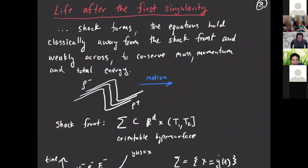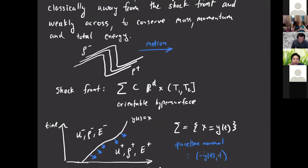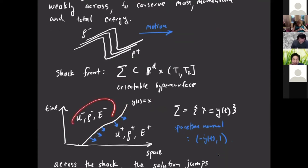Now the main contribution of the present work: how to continue past this first singularity. A discontinuous shock wave has to emerge, and across this surface the variables will have jump discontinuities. There's some space-time set — the shock front sigma — that emanates from the point where there's a pre-shock. The fluid takes some values to the left and right of the shock, and those will be different, propagating as this curve tells you.